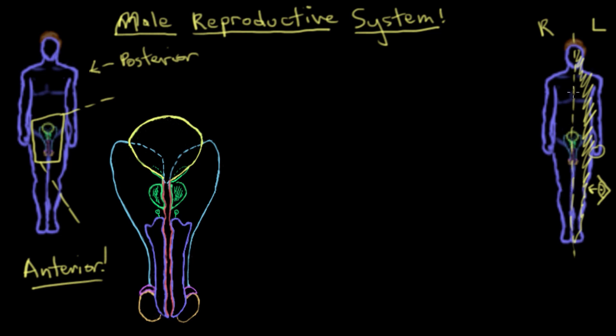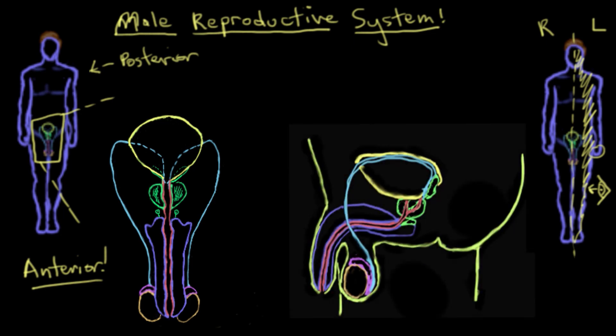We're seeing this cut surface here. What that ends up looking like is something like this here. And so this is called a sagittal view.